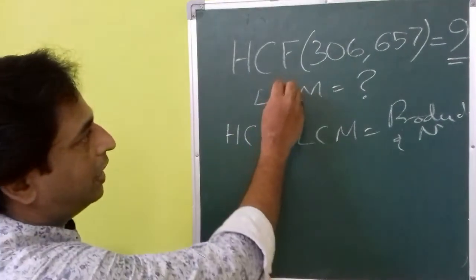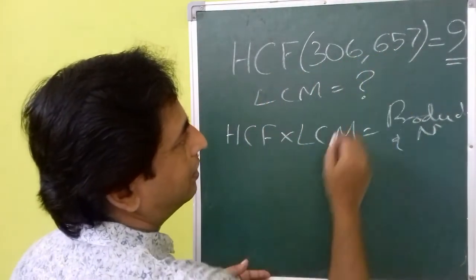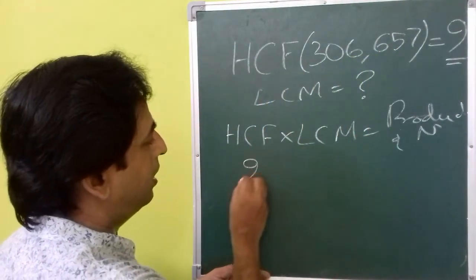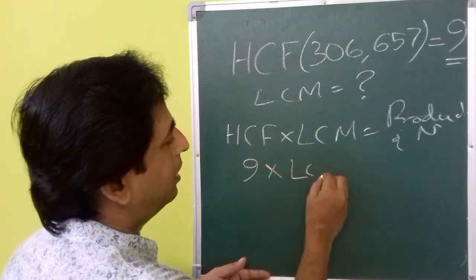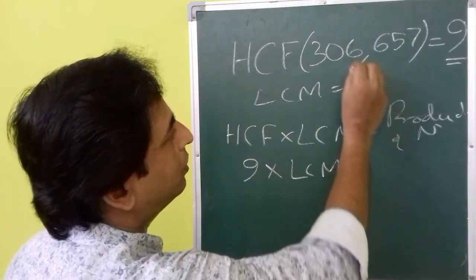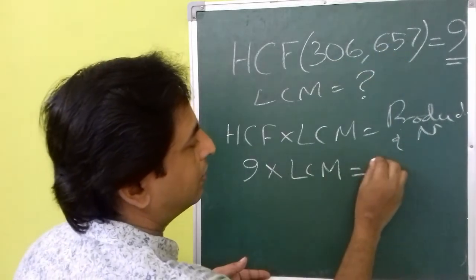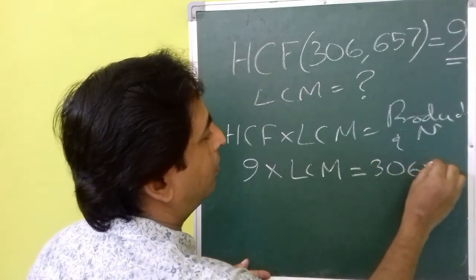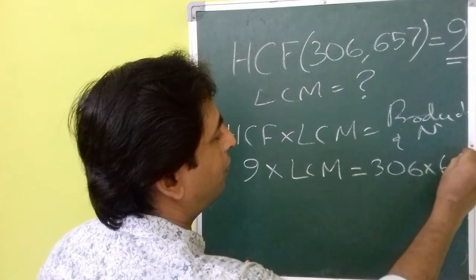That means the HCF of 306 and 657, that is 9, multiplied by the LCM of these two numbers will be equal to the product of numbers, that is 306 multiplied by 657.